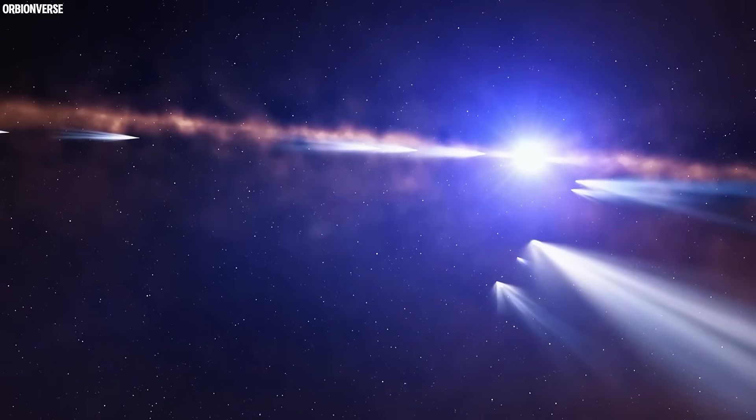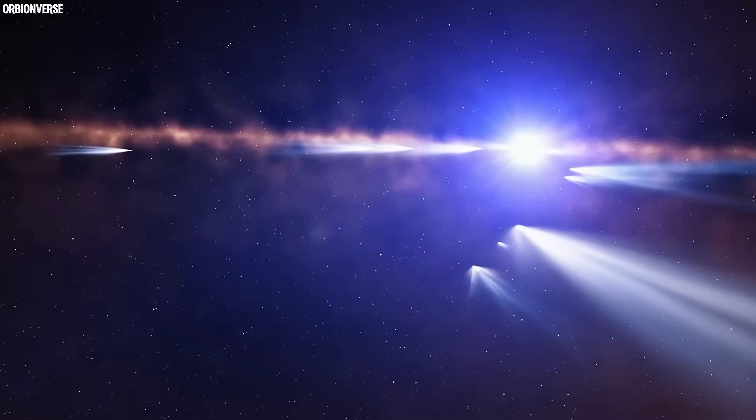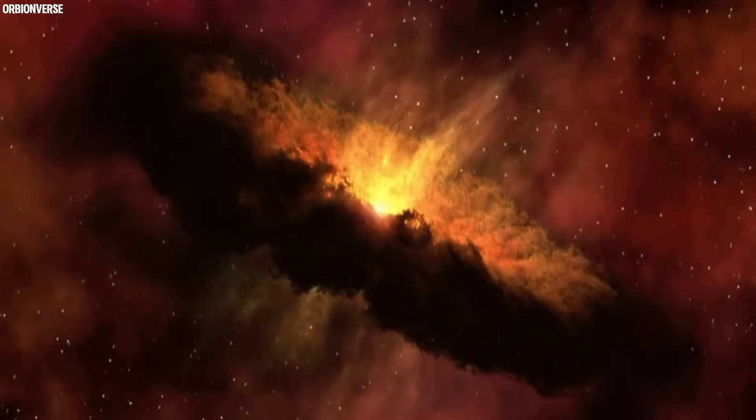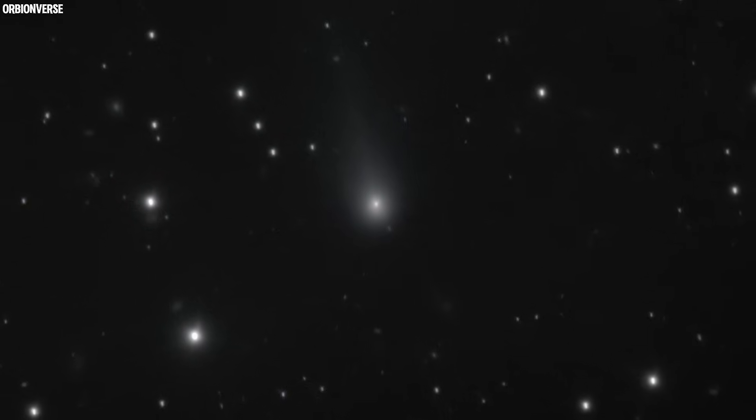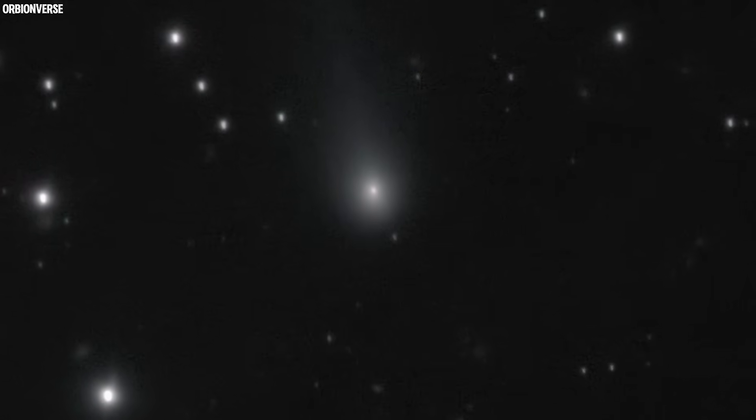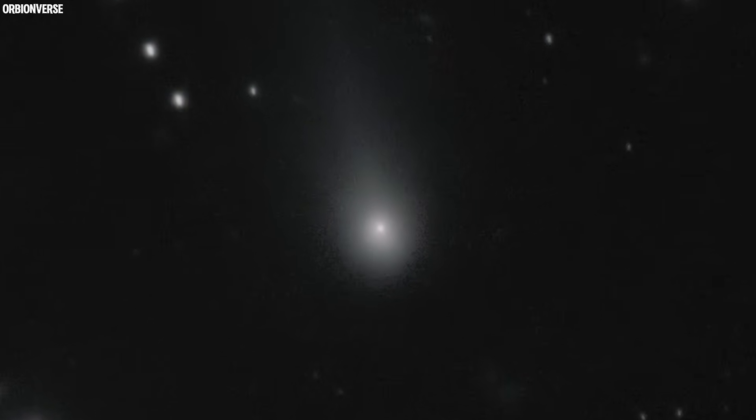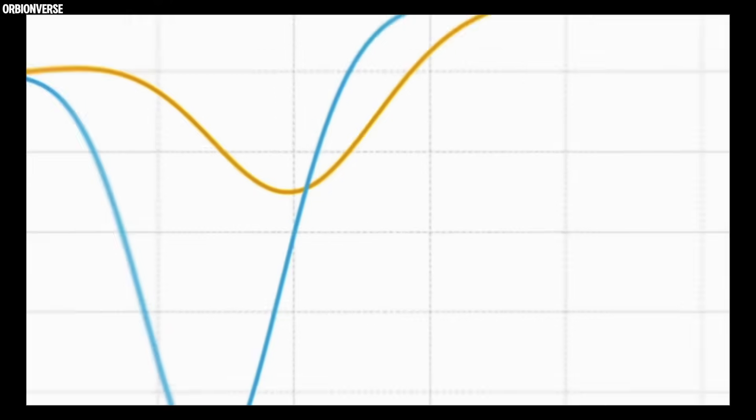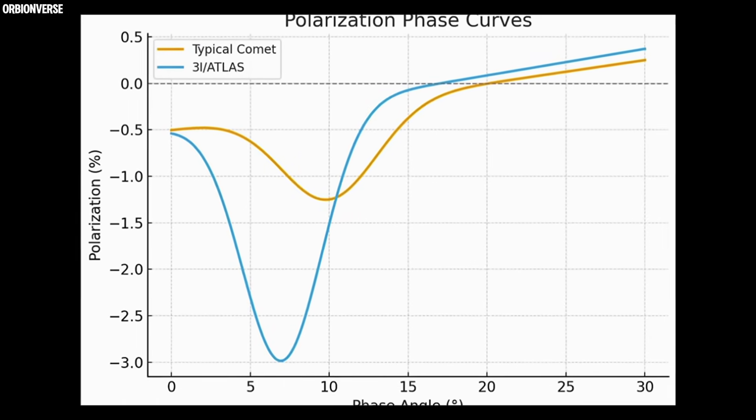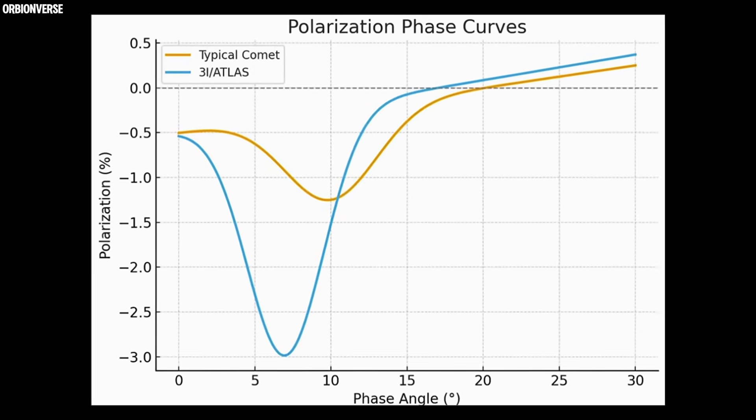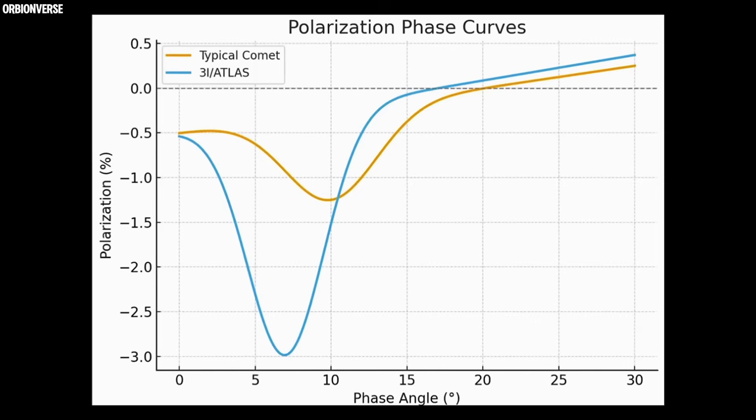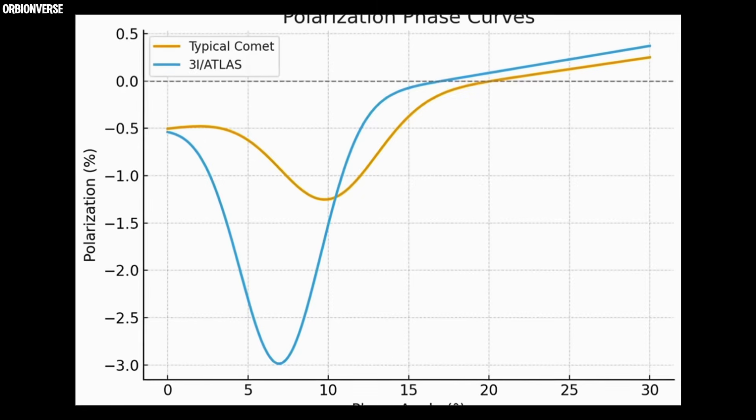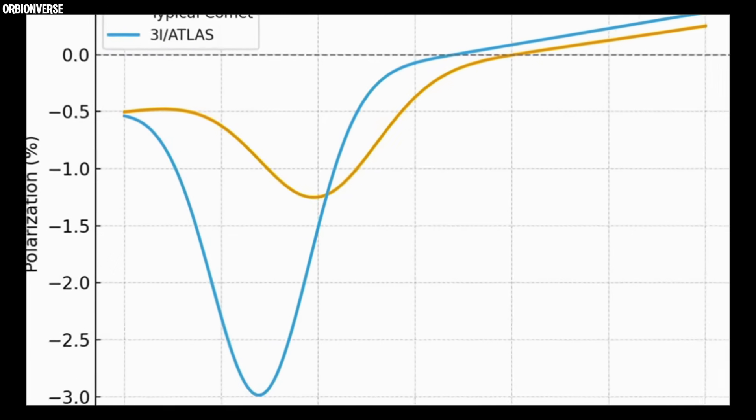Each theory points to a different birthplace, a different chapter in our galaxy's long history. But the surprises didn't stop there. When astronomers studied its polarization - the way light scatters off its dust - they found something never seen before. The degree of negative polarization was extreme, reaching minus 2.7 percent around 7 degrees, with a very low inversion angle near 17 degrees.